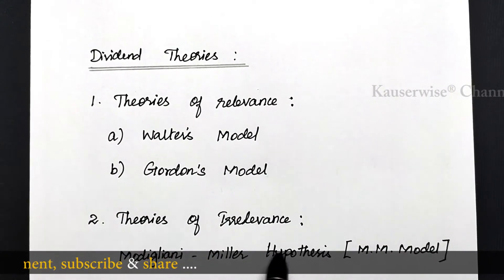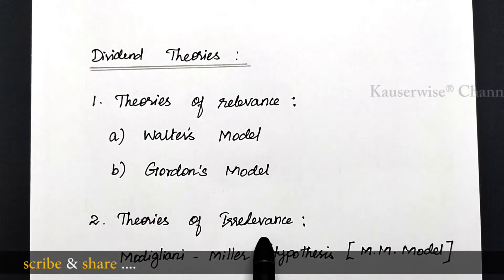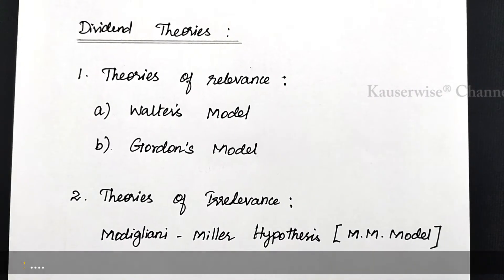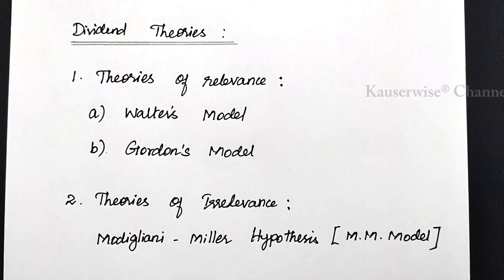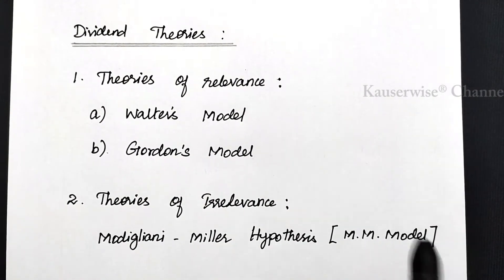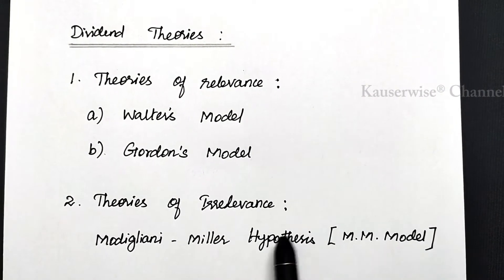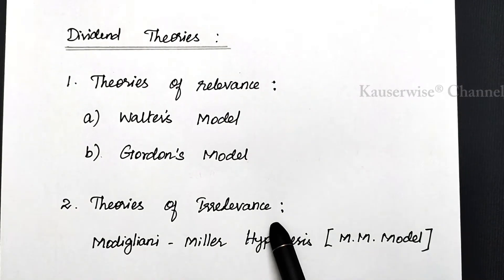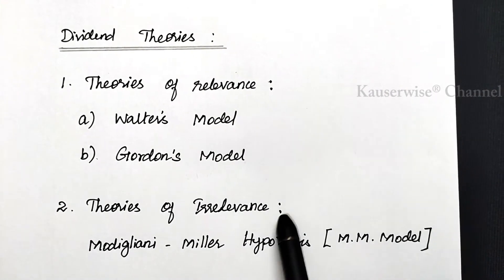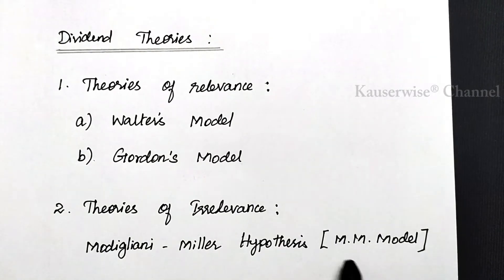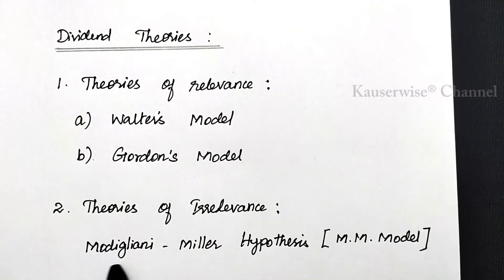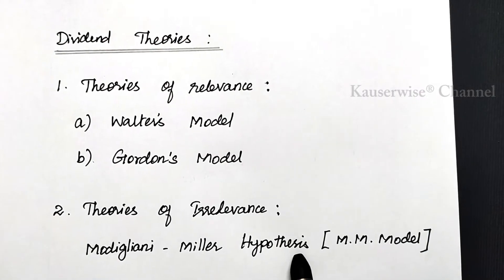The second theory is theories of irrelevance. Theories of irrelevance means the dividend policy is irrelevant and it does not affect the market value of equity shares. Under this, we have one model — that is the MM model, which stands for Modigliani-Miller hypothesis model.